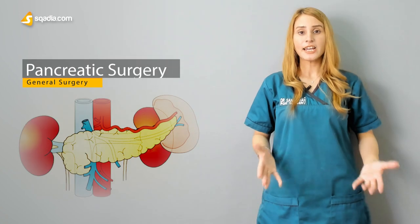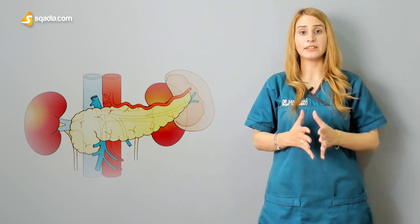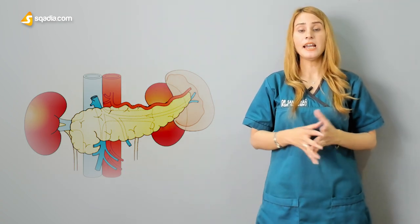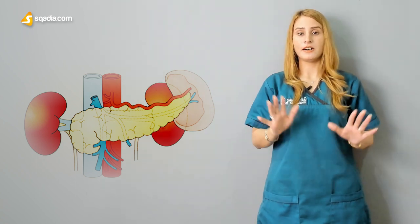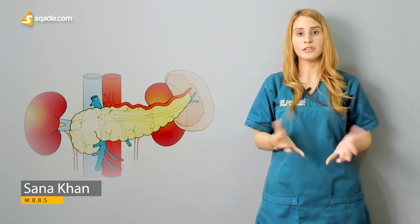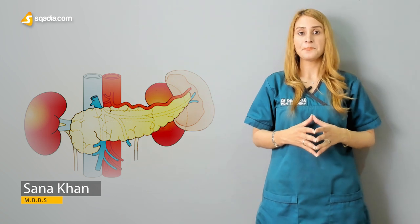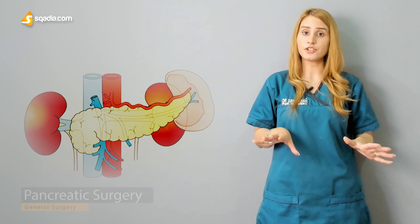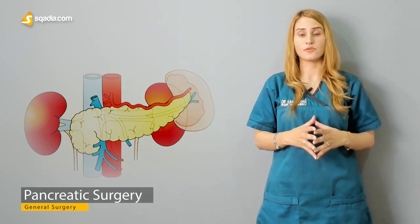The pancreas is the most important exocrine and endocrine gland, located in the central abdomen, occupying the epigastric quadrant compared to the nine quadrants of the abdomen. Its important functions include both exocrine and endocrine functions.